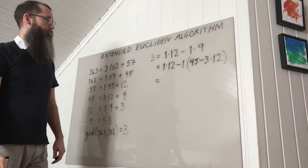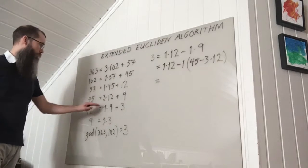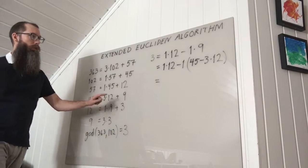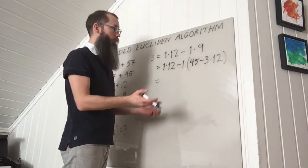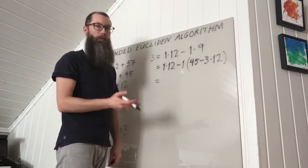And that gives me now I want to express 3 as a linear combination of 45 and 12. So I count up the number of 12 I have and the number of 45 I have.